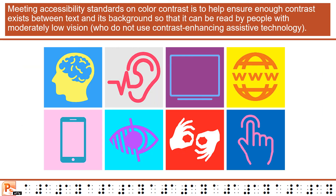Meeting accessibility standards on color contrast helps ensure enough contrast exists between text and its background so that it can be read by people with moderately low vision who do not use contrast-enhancing assistive technology.